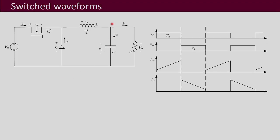In the introductory lecture, I had told you that the main source of EMI in power electronics are the switched waveforms — the switch voltage and current waveforms. So you might be recalling this buck converter which we have been using again and again to explain design concepts. Here, when you see these voltage waveforms, this is the diode voltage waveform across this diode, and this is the switch voltage waveform across the switch, and this is the current through the switch and the current through the diode.